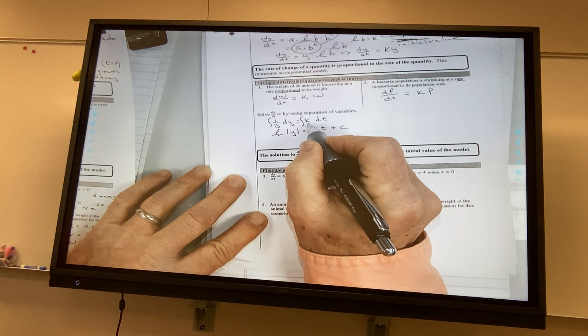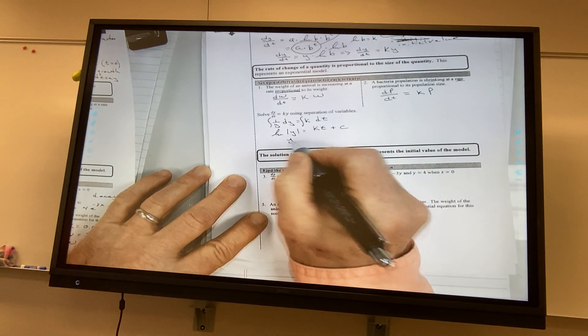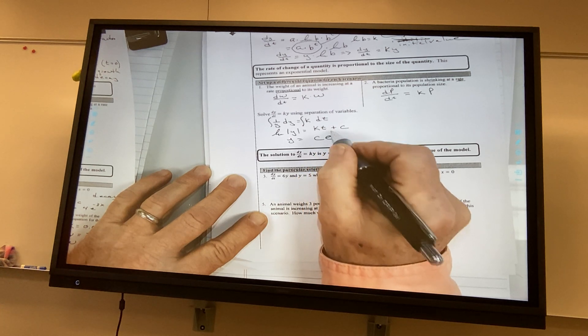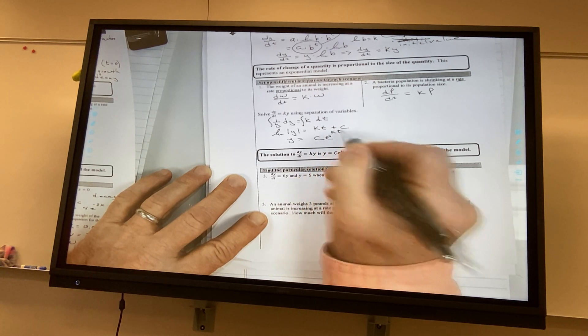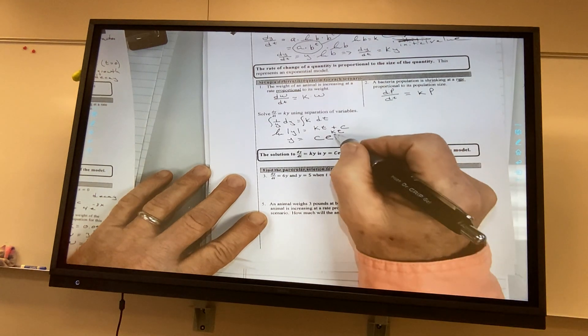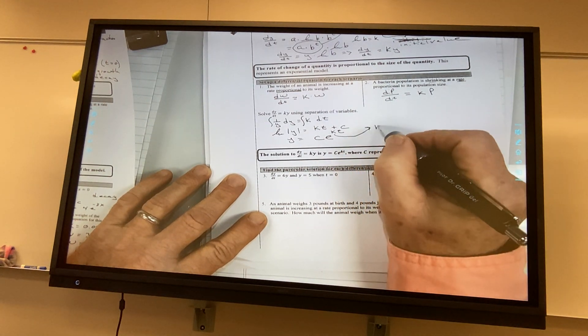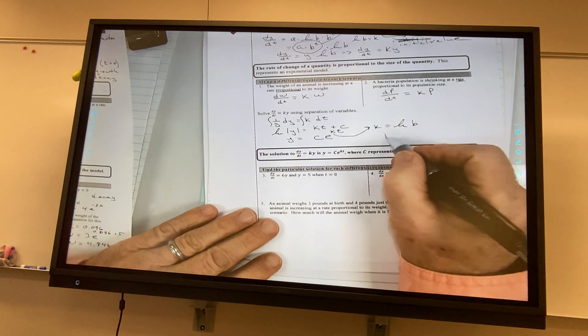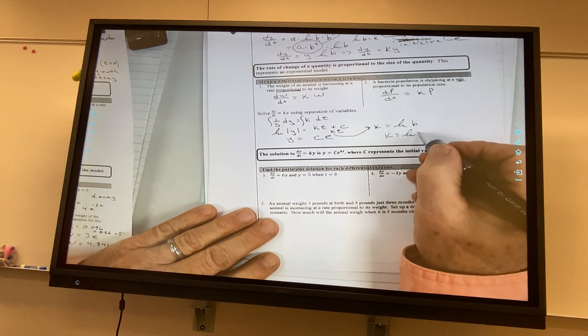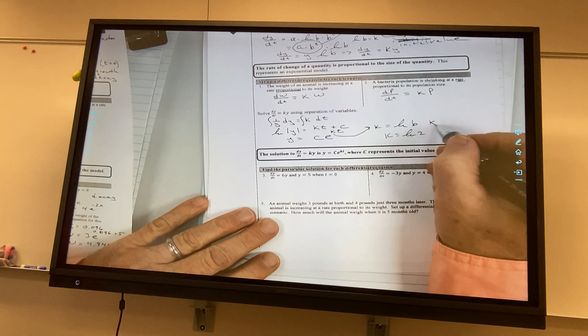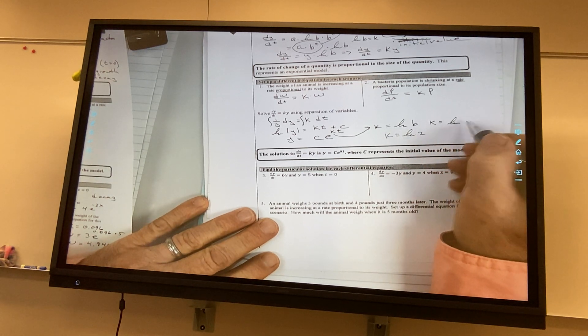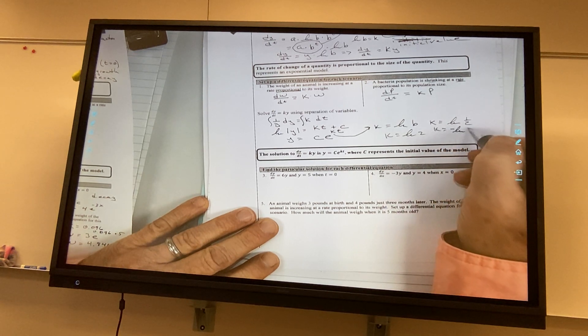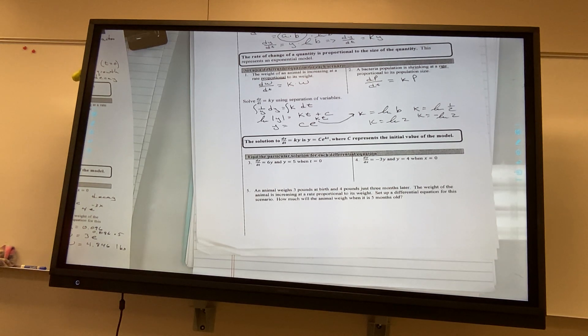Remember, k is a constant. That means y is equal to c e to the kt power. And this k is equal to the natural log of some base. Like when we doubled, k was equal to the natural log of 2. When we were using a half, k was equal to the natural log of 1 half. Or, the negative natural log of 2. Does everybody see that connection?